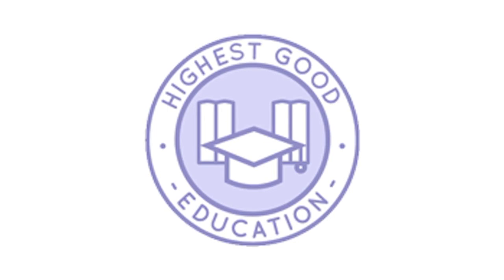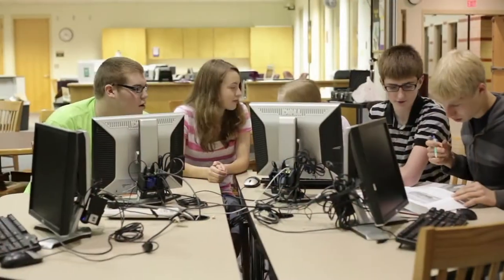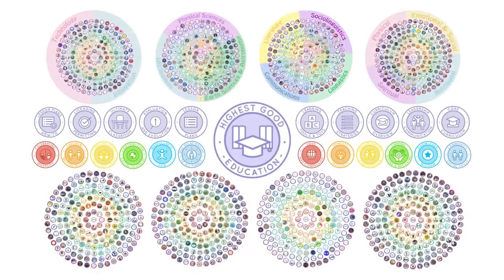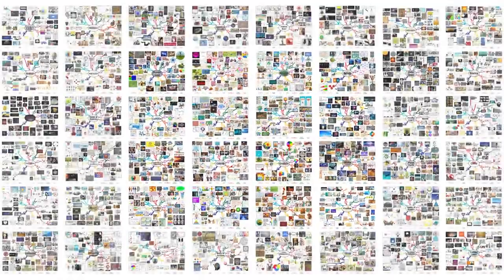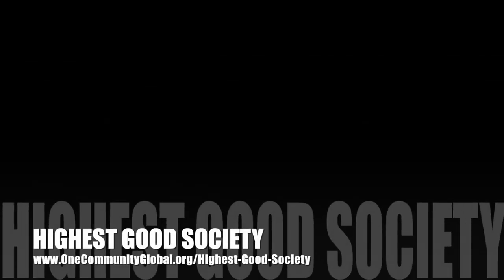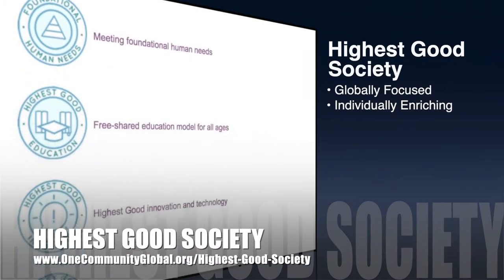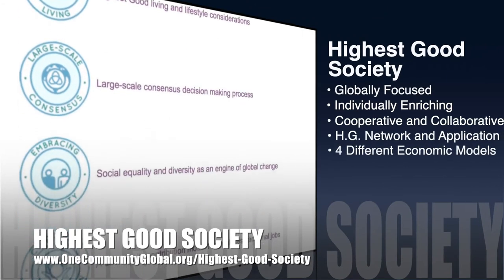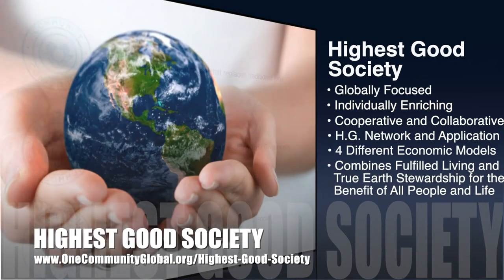One Community's approach to Highest Good Education is designed for all age groups, adaptable to any schooling environment, inspiring and fun for all participants, and includes national standards, all subjects, lesson plans, teaching strategies, learning strategies and tools, classroom design, and more. The One Community approach to Highest Good Society is globally focused, individually enriching, cooperative and collaborative, includes a Highest Good network and application, four different economic models, and combines fulfilled living and true earth stewardship for the benefit of all people and all life on this planet.